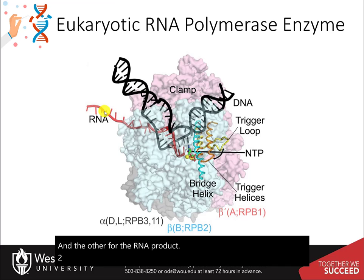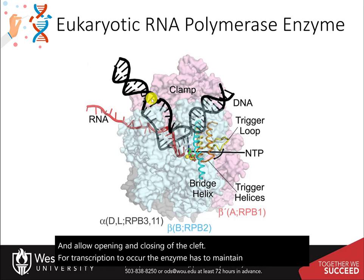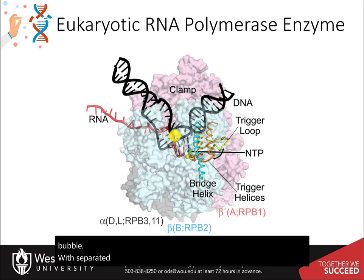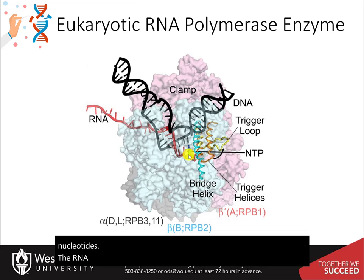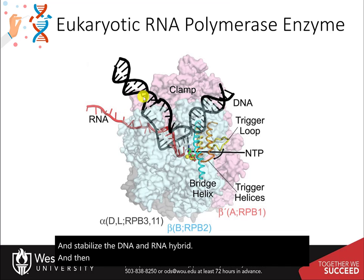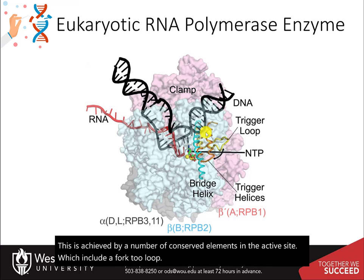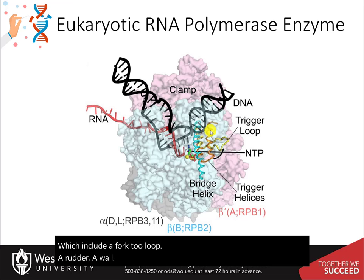Two pinchers called the clamp and the jaw stabilize the DNA at the downstream end and allow opening and closing of the cleft. For transcription to occur, the enzyme must maintain a transcriptional bubble with separated DNA strands that facilitate the addition of nucleotides. The RNA polymerase must also translocate along the template, stabilize the DNA-RNA hybrid, and allow the DNA to re-anneal. This is achieved by conserved elements in the active site, which include a forked loop, a rudder, a wall, a trigger loop, and the bridge helix.